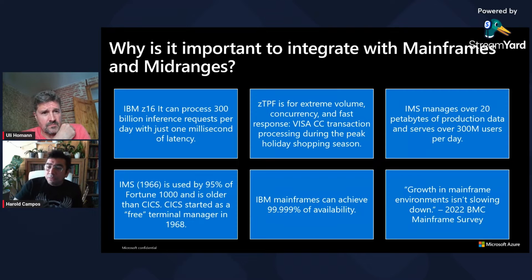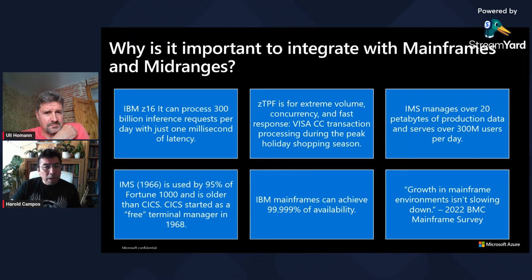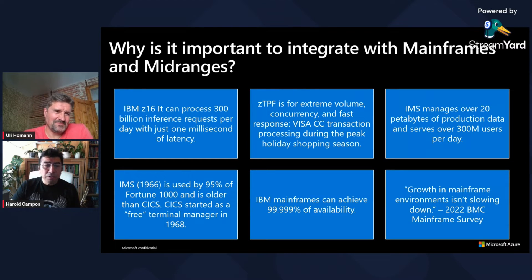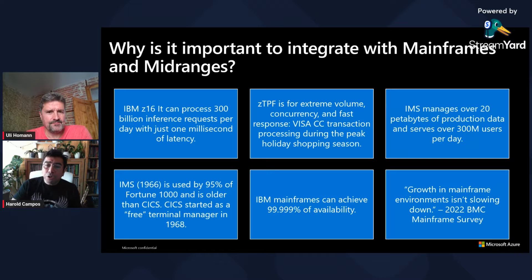Some additional facts about mainframes: IBM recently released the D16, which can process 300 billion inference requests per day with just one millisecond of latency. CTPF is known for the extreme volume, concurrency, and fast response it provides — for instance, Visa credit card transaction processing during the peak holiday shopping season. IMS manages over 20 petabytes of production data and services 300 million users per day. Considering that IMS was born in 1966, it's still used by 95% of the Fortune 1000. IBM mainframes can achieve 95% availability, and according to a recent BMC survey, the growth of mainframe environments is not really slowing down, but customers are trying to leverage the existing MIPS capacity.